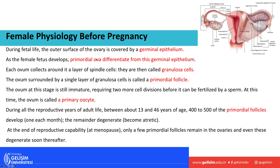The ovum collects a layer of spindle cells called granulosa cells around it. When an ovum is surrounded by granulosa cells, it is called a primordial follicle. The ovum is still too immature to be fertilized at this point — it needs two more rounds of cell division. We call this a primary oocyte.